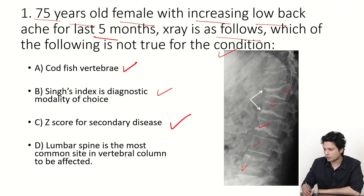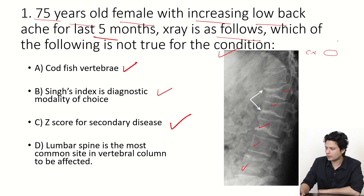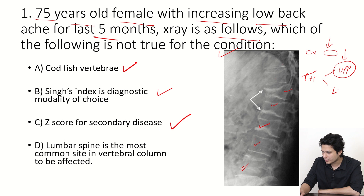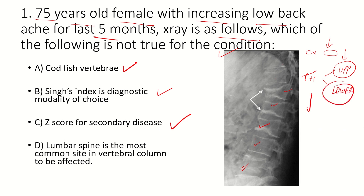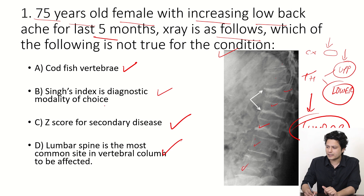The lumbar spine is the most common site to be affected in the vertebral column — this also holds true. The cervical spine bears only the weight of the head, the upper thoracic spine bears the upper thorax, but as we move lower the weight increases. By the time we reach the lumbar spine, the majority of body weight is carried there. So if bone density decreases, the lumbar vertebrae are particularly prone to compression. Therefore, Singh index is no longer the diagnostic modality of choice — it was used before the advent of DEXA scan.